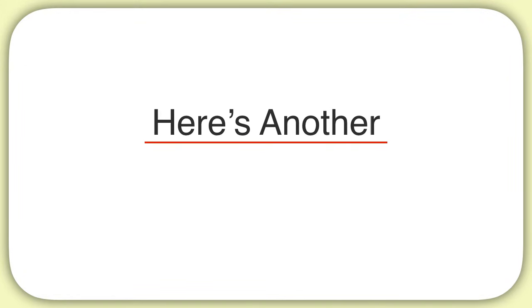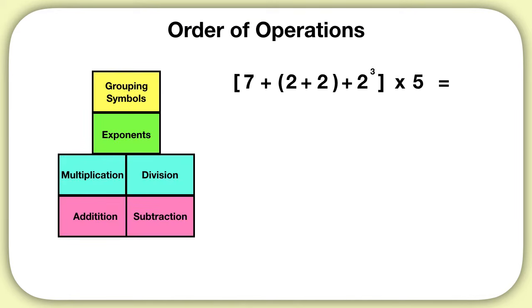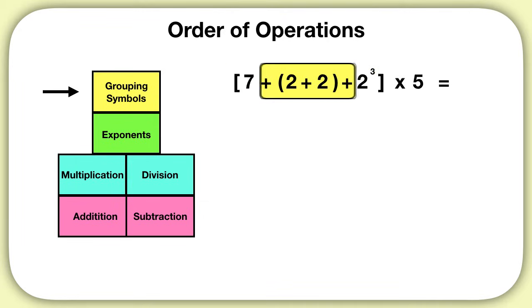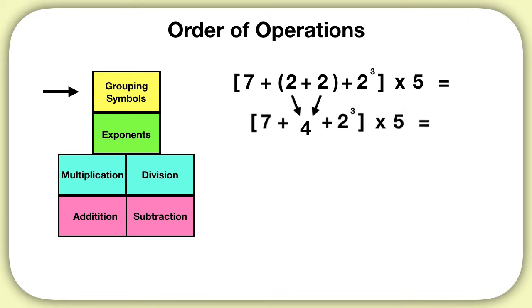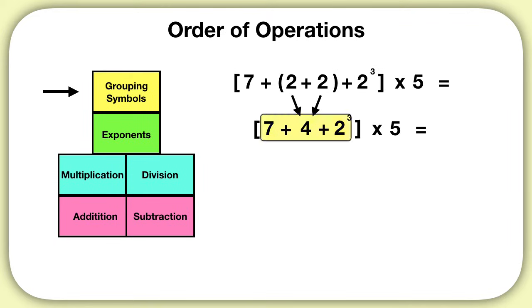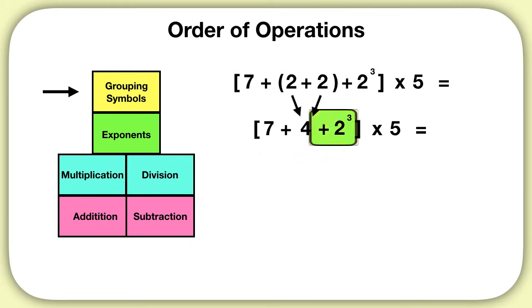Here's another problem to practice with. Let's solve this equation using order of operations. What should I solve first? We look for grouping symbols, and we see they're here. And inside of those grouping symbols, we have parentheses. We solve that first. 2 plus 2 is 4. Now inside of my brackets, my grouping symbols, I see an exponent. I will solve that exponent next. 2 to the power of 3 is 8.